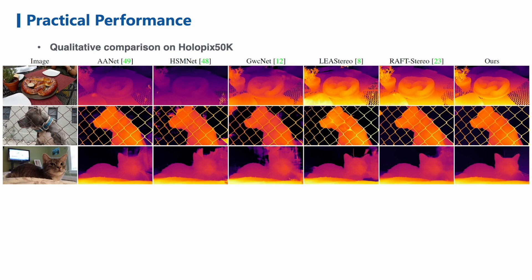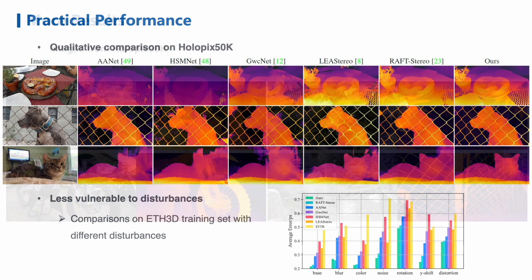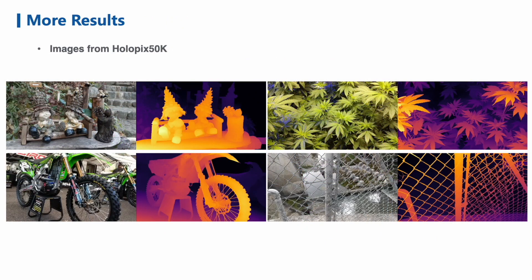We also simulate common disturbances in practical scenes including image blur, color transform, spatial distortion, and so on. The results demonstrate that our method is more robust than others. Here we show more results on Holopix 50K. Our method achieves high accuracy for arbitrary scenes and preserves superior details for various fine-structured objects such as net wires and wheel spokes.